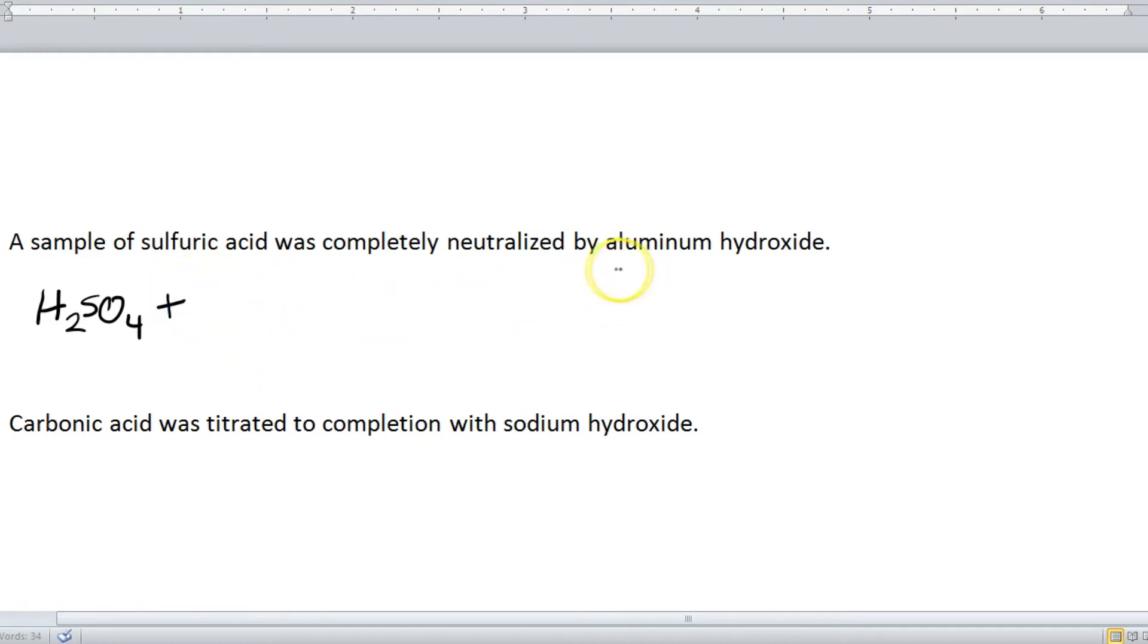And we're going to say plus, and then we have aluminum hydroxide. So aluminum is Al, hydroxide is OH, aluminum is a charge of plus three, hydroxide is negative one, so I need three hydroxides to balance that out.